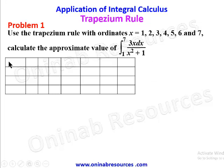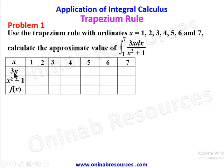The first row is x with values 1, 2, 3, 4, 5, 6, and 7. Then we have 3x as the numerator and x² + 1 as the denominator, giving us f(x). For 3x: 3×1=3, 3×2=6, 3×3=9, 3×4=12, 3×5=15, 3×6=18, 3×7=21. For x²+1: 1+1=2.